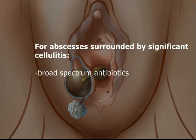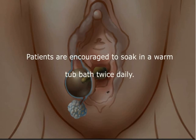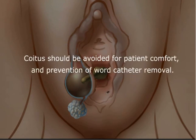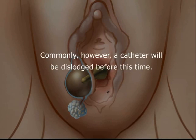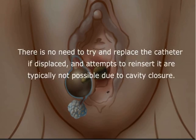Abscesses are typically surrounded by significant cellulitis, and in such cases, broad-spectrum antibiotics to treat a polymicrobial infection are warranted. Patients are encouraged to soak in a warm tub bath twice daily. Coitus should be avoided for patient comfort and prevention of word catheter removal. Ideally, the catheter is left in place for 4 to 6 weeks. If the catheter is dislodged before this time, there is no need to replace it, as attempts to reinsert are typically not possible due to cavity closure.